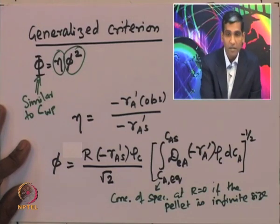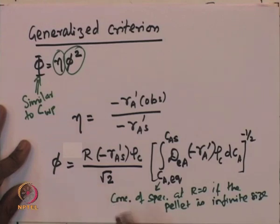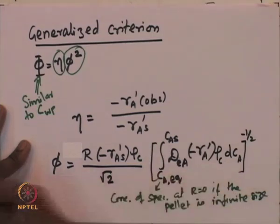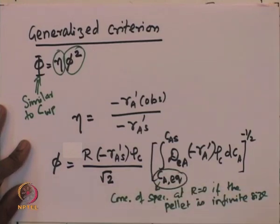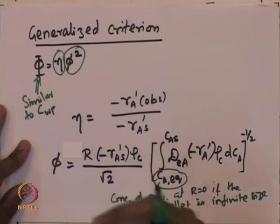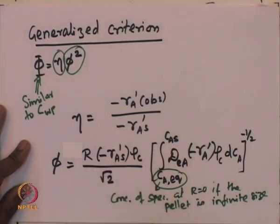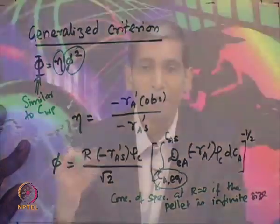In this definition, C_A,equilibrium is the concentration at the center of the pellet if it were infinitely large. For a non-reversible reaction, this equals 0, because the species concentration at the center approaches zero over infinite time. For a reversible reaction, it takes the equilibrium concentration value.